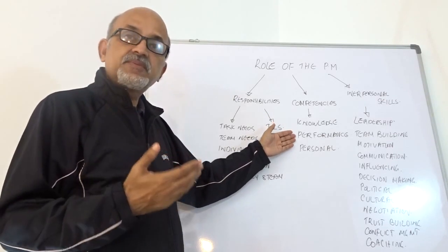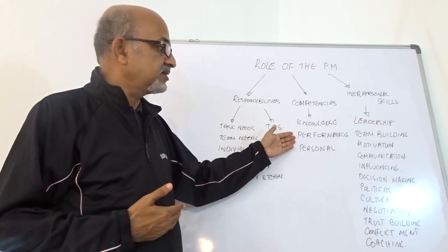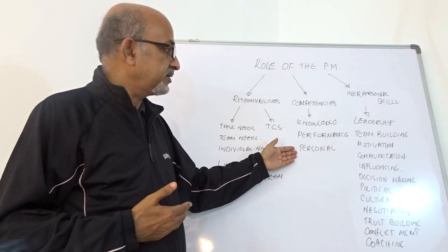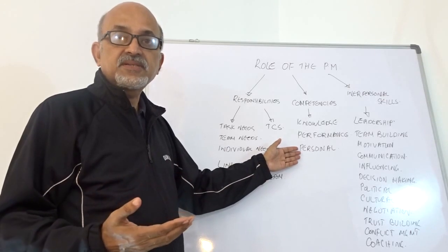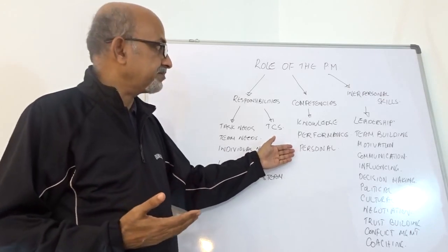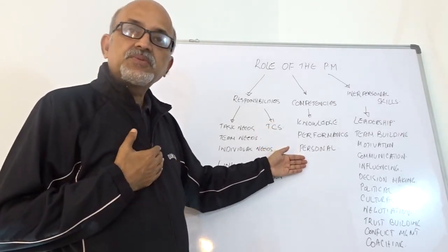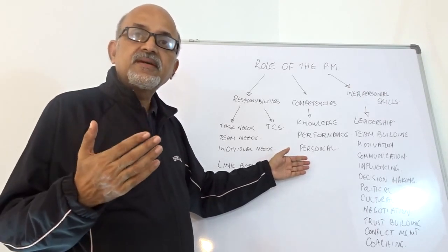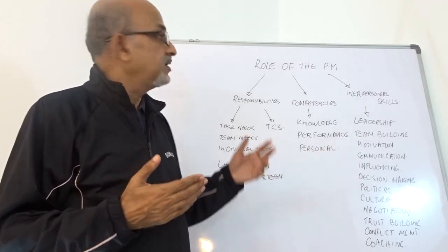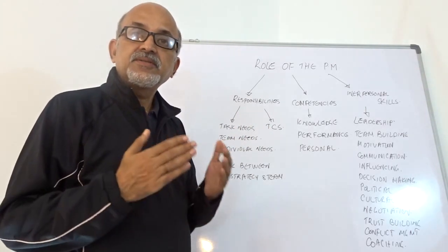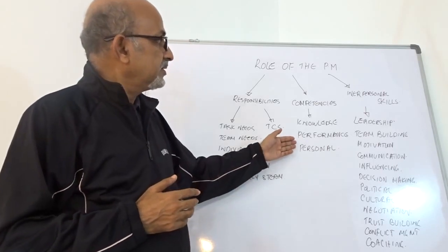One must know the project management good practices before developing into project management. Then the project manager should have the capability to perform — one may have all the knowledge, but if they don't have the conviction and confidence, there is a problem. The project manager must also conduct themselves professionally in front of the team so they can be a role model for others. That is what is meant by the personal competencies of a project manager.